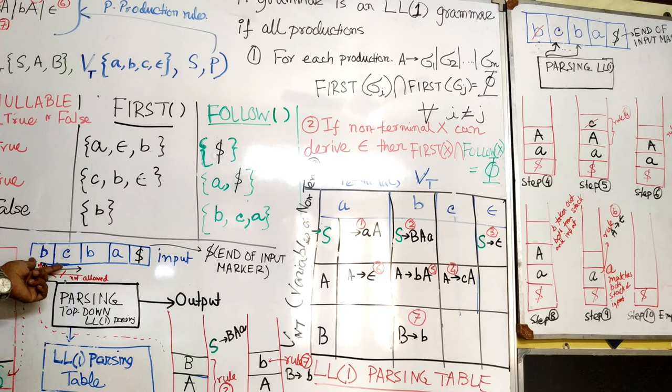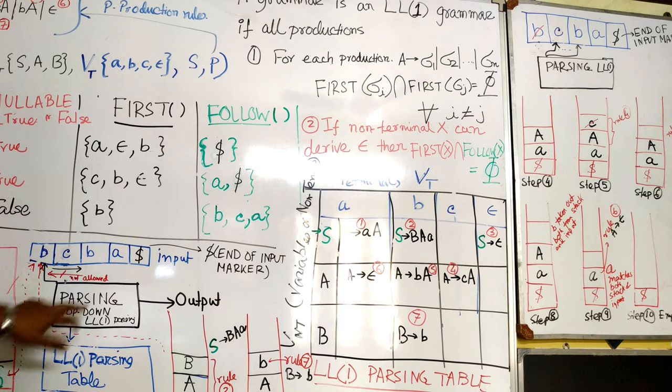First, what is to be done: this parsing table, the input buffer, then say we have to parse the string b, c, b, a. End of input is dollar, the input marker. This dollar and the stack dollar, don't confuse them. This is end of stack marker, so I keep it distinct. Initially we put the start symbol here. In top-down parsing, we put first S. We will see reverse in bottom-up parsing.